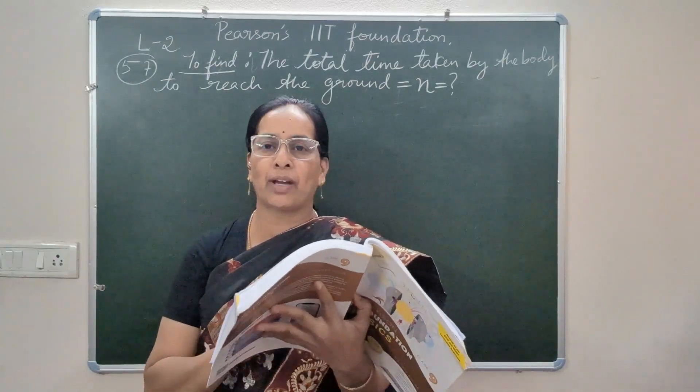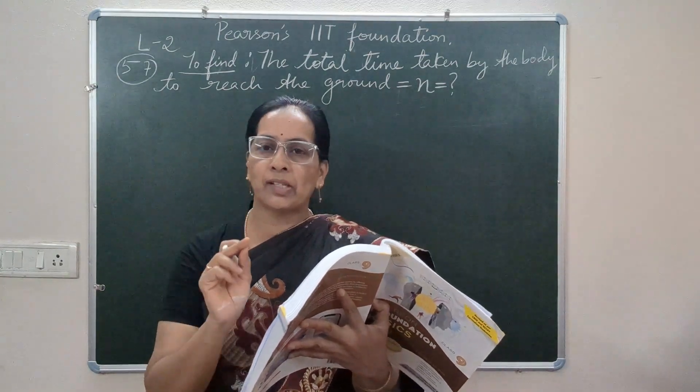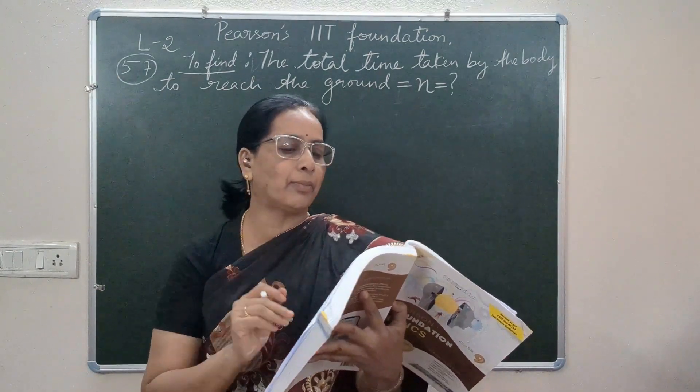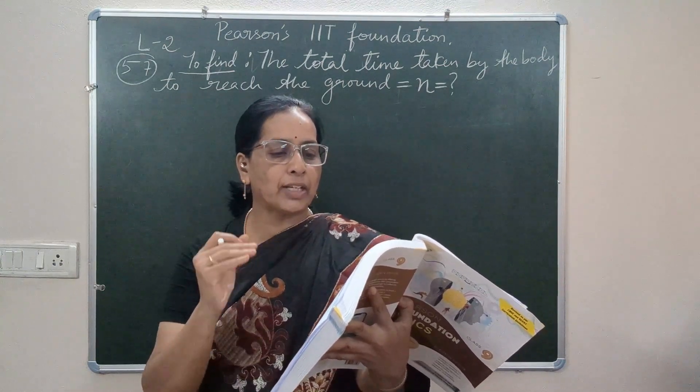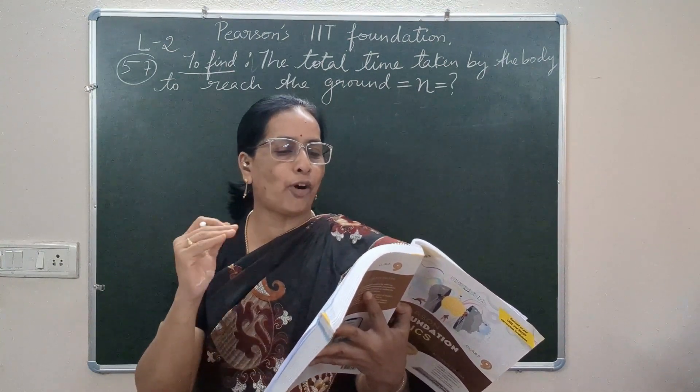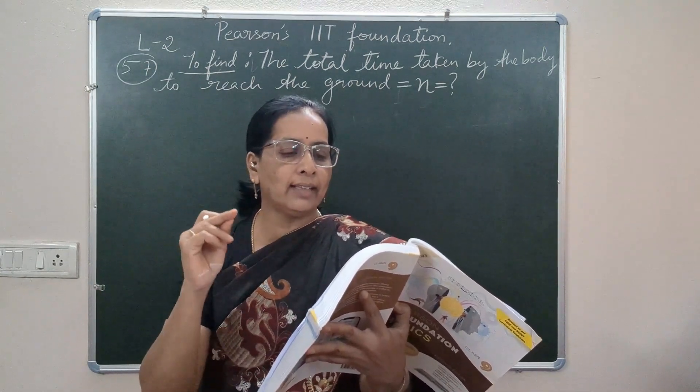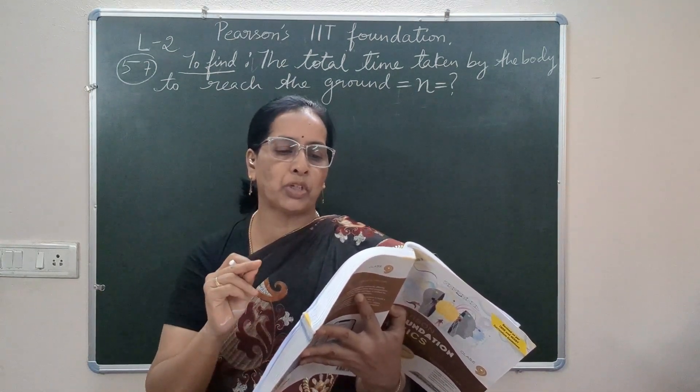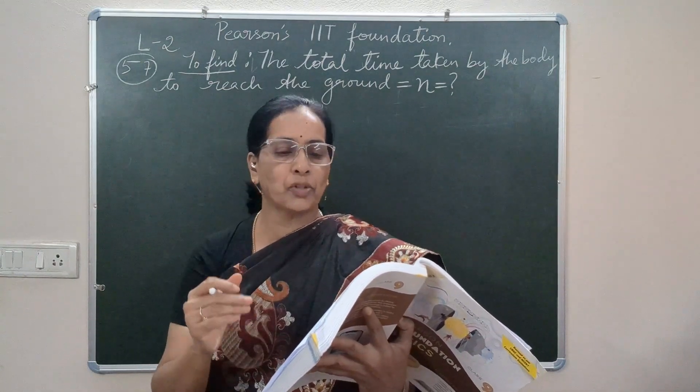Now I'm in 57th question, level 2 kinematics chapter. The question is quite interesting. I will put this question in the description box but right now I'm reading it out so that it is understood. The question says the ratio of distance described by a body falling freely from rest in the last second of its motion to that in the last but one second of its motion is 5 is to 4.